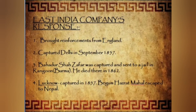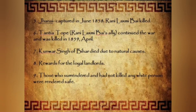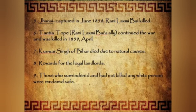In Jhansi, the 22-year-old Rani Lakshmibai led the rebels when the British refused to accept the claim of her adopted son to the throne. She fought fearlessly and bravely against the British forces but was ultimately defeated. Rani Lakshmibai escaped, and later she was joined by Tatya Tope; together they marched to Gwalior and captured it, driving out Scindia, a loyal British ally. Fierce fighting followed — the Rani of Jhansi fought like a tigress and died fighting to the very end. Gwalior was recaptured by the British. In Bihar, the revolt was led by Kunwar Singh.